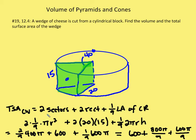For the two sectors, each sector is one-ninth of the area of each respective circle — so 40 over 360. I have two times one-ninth times pi r squared. Then I add the two rectangular sides, both 20 by 15. Then I add the lateral surface area, which is one-ninth of the circumference times the height.